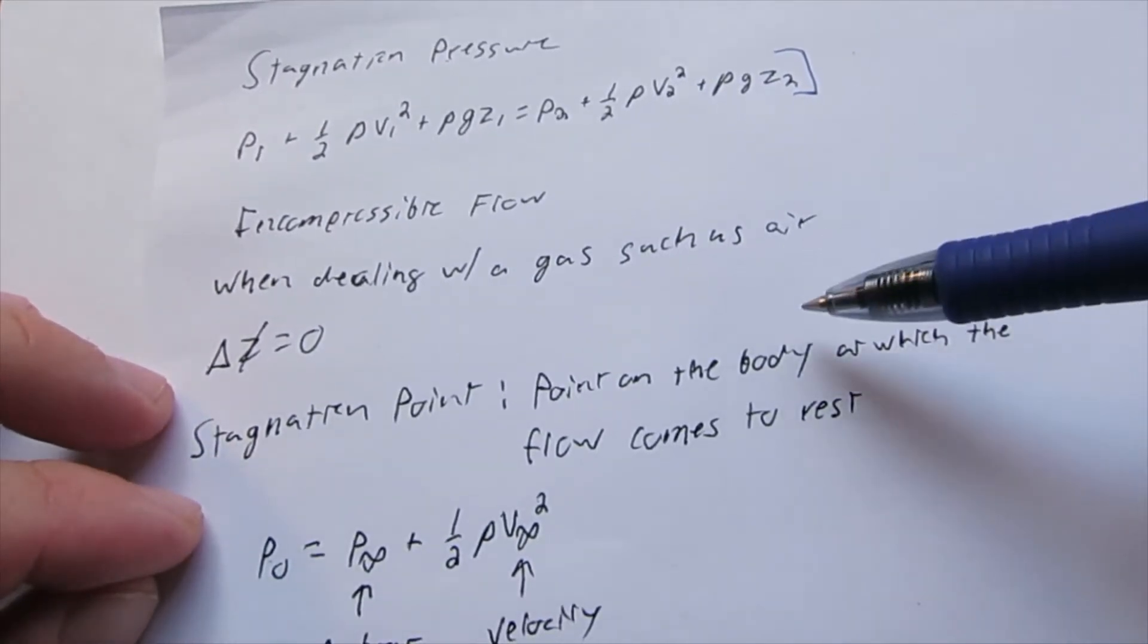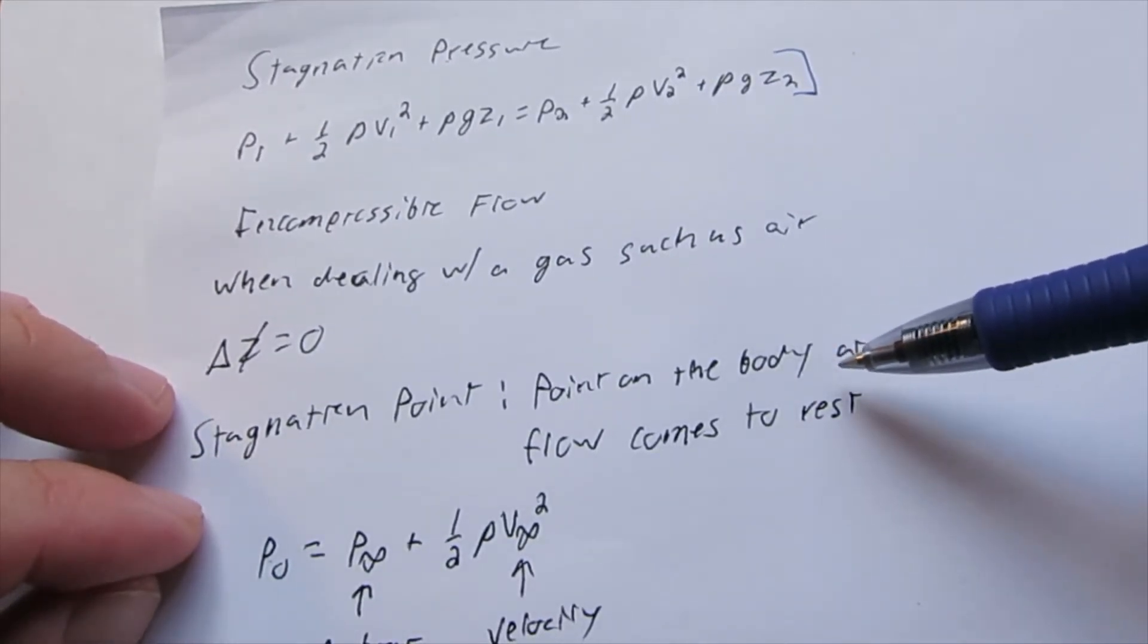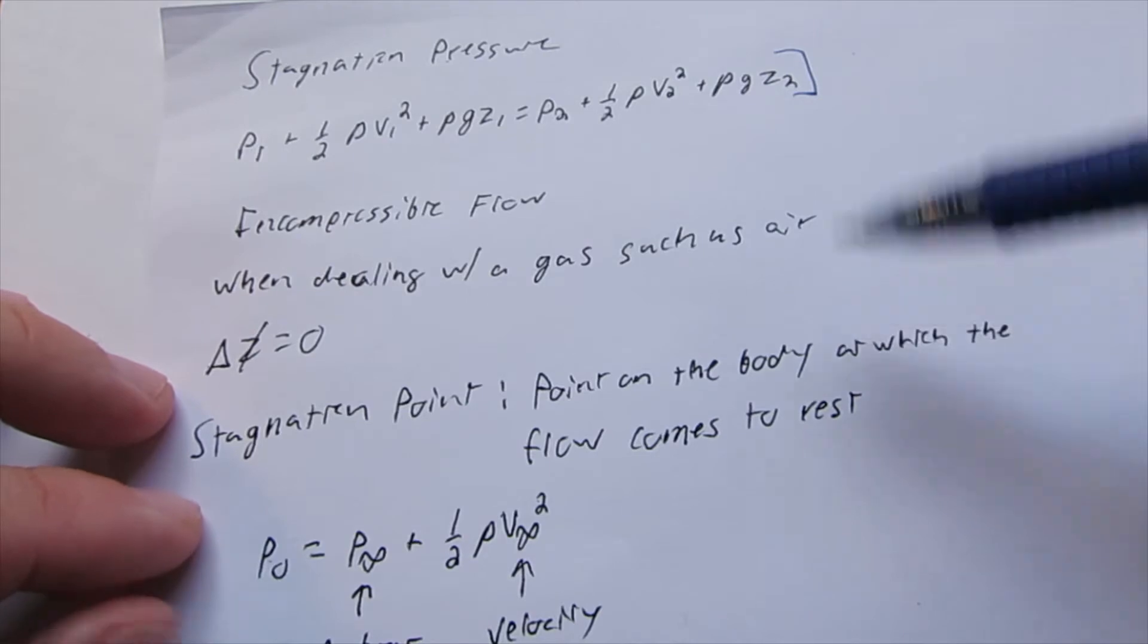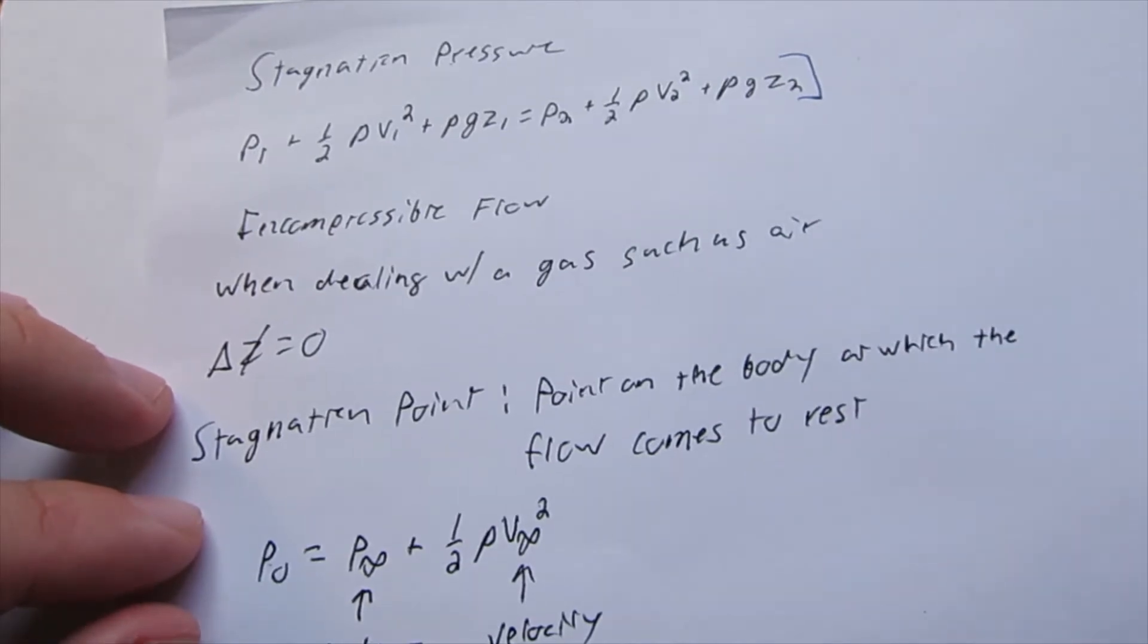A stagnation point is a point on the body at which the flow comes to rest. That's the maximum pressure that the body is going to experience, and usually it's for a moving object through air.